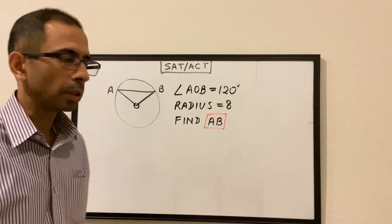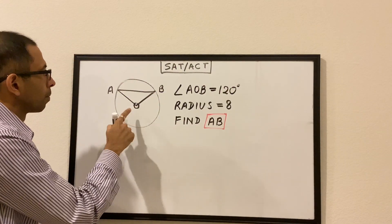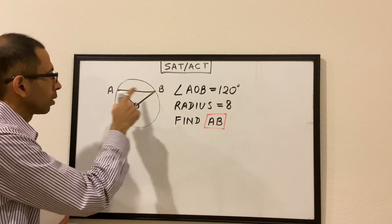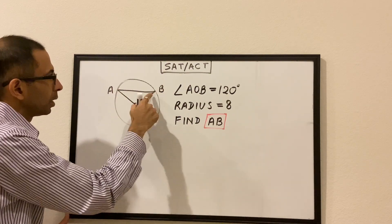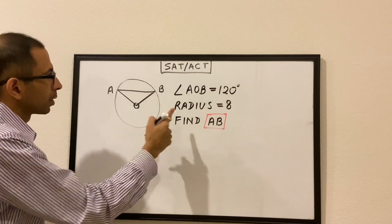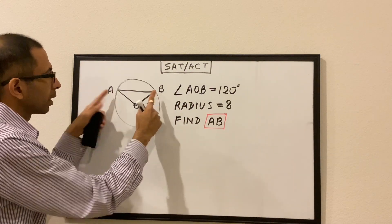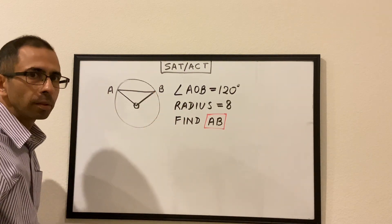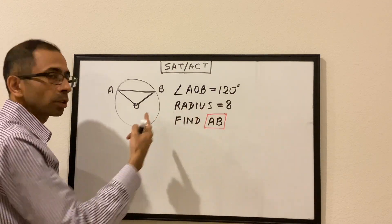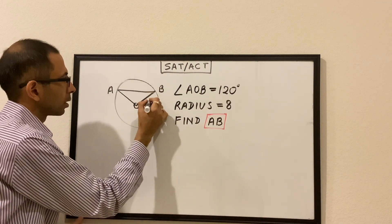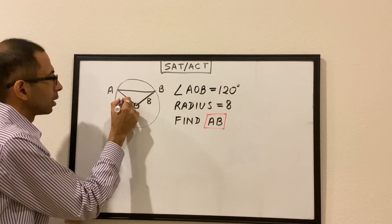Let's look at another question. We have a circle with center O and two points on the circle, A and B. Angle AOB is equal to 120 degrees, the radius of the circle is 8, and we have to find the length of AB.